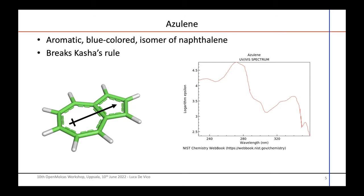We decided to test the code on azulene. We chose it because it's an interesting molecule — it's aromatic and isomeric with naphthalene, but while naphthalene is totally nonpolar and completely transparent, azulene, as the name says (from Spanish, 'blue'), has a very strong dipole moment. It's also interesting because it breaks Kasha's rule: if you photoexcite this molecule, it fluoresces from S2 and not from S1, which is what Kasha's rule commonly predicts.